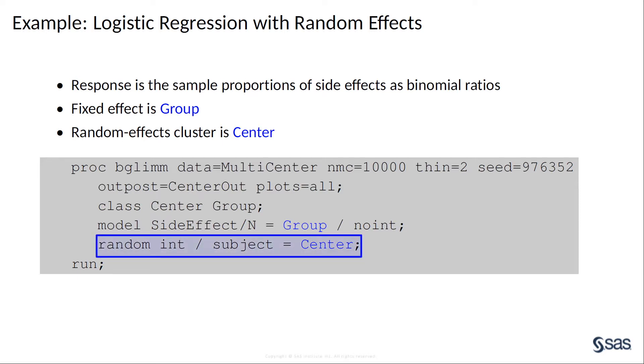Along with the model statement for fixed effects, the random statement is used for random effects. It specifies that the linear predictor contains an intercept term. The subject option defines center as a subject index for the random effects grouping, so that each center has its own intercept.